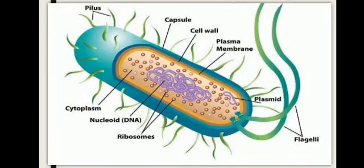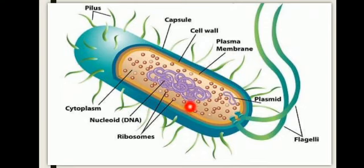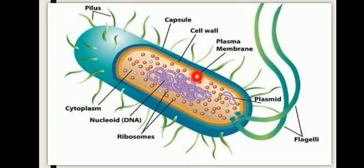یہاں diagram کے اندر آپ bacteria کا structure دیکھ سکتے ہیں اور ribosomes کی location چیک کر سکتے ہیں۔ Ribosomes دو فارم میں cell کے اندر exist کرتے ہیں: یا تو cytoplasm کے اندر freely move کر رہے ہوتے ہیں، یا cell membrane یعنی plasma membrane کے ساتھ loosely attached ہوتے ہیں۔ ان کا کام protein synthesis کا ہے اس لیے انہیں protein factory کہتے ہیں۔